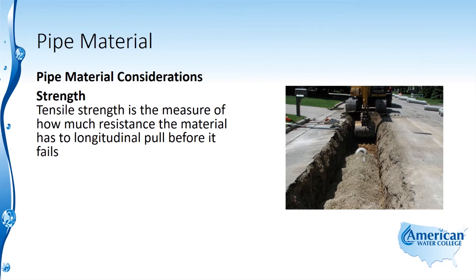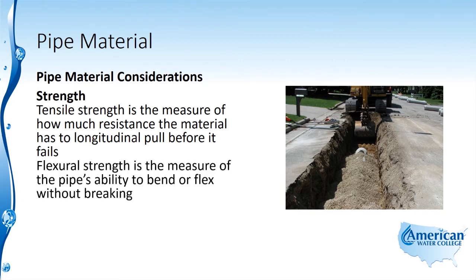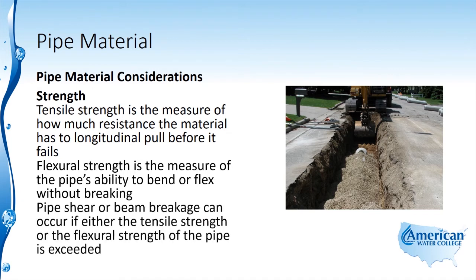Tensile strength is the measure of how much resistance the material has to longitudinal pull before it fails. Flexural strength is the measure of the pipe's ability to bend or flex without breaking. Pipe shear or beam breakage can occur if either the tensile strength or the flexural strength of the pipe is exceeded.